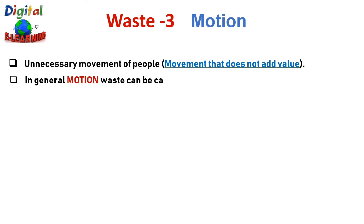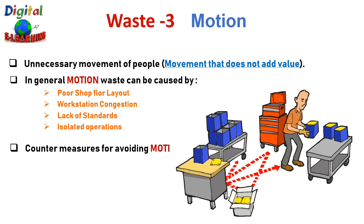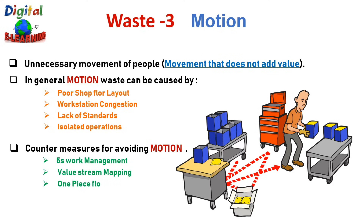In general, motion waste can be caused by poor shop floor layout, workstation congestion, lack of standards, and isolated operations. Countermeasures for avoiding motion waste include implementing a 5S working management system, developing a value stream mapping, one-piece flow, and better work and people planning.